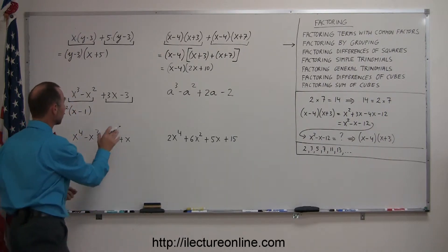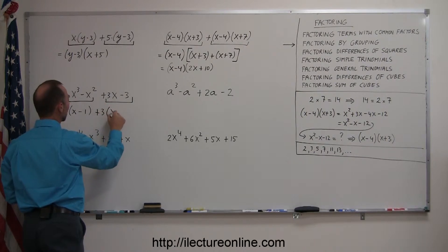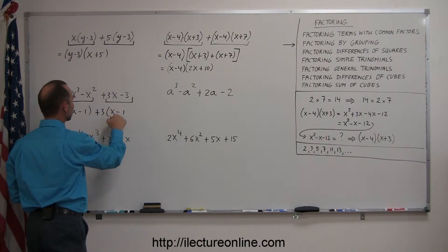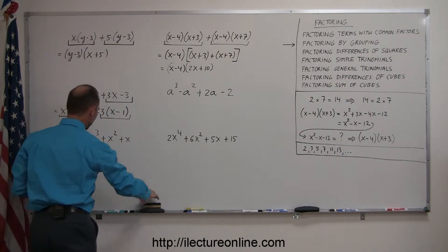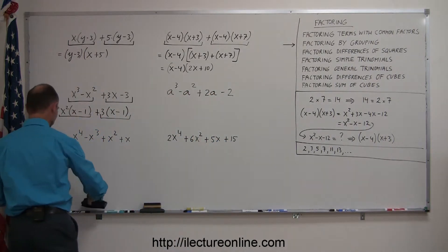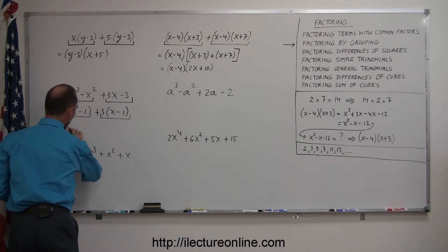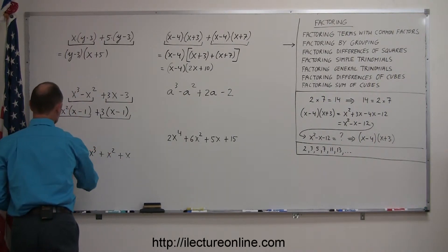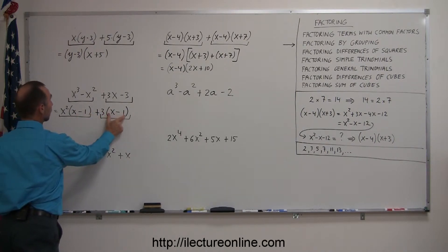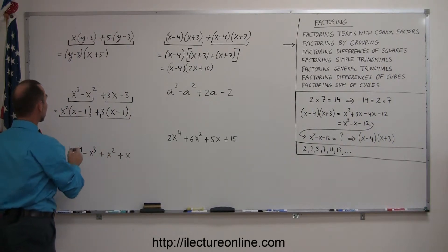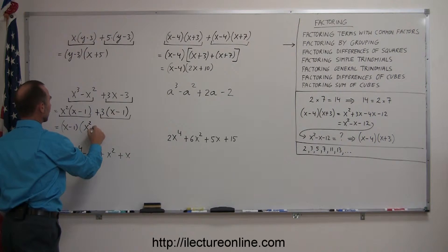I do the same with the second group — I look and see what's common, and here I can see that the number 3 is common in each term. So I factor out a 3, and I'm left with (x minus 1), because 3x divided by 3 is x and minus 3 divided by 3 is minus 1. Now I notice I have two terms, and I'm going to give myself a bit more room. There's an x⁴ minus x³ plus 3x minus 3. Now I have x squared times (x minus 1) plus 3 times (x minus 1).